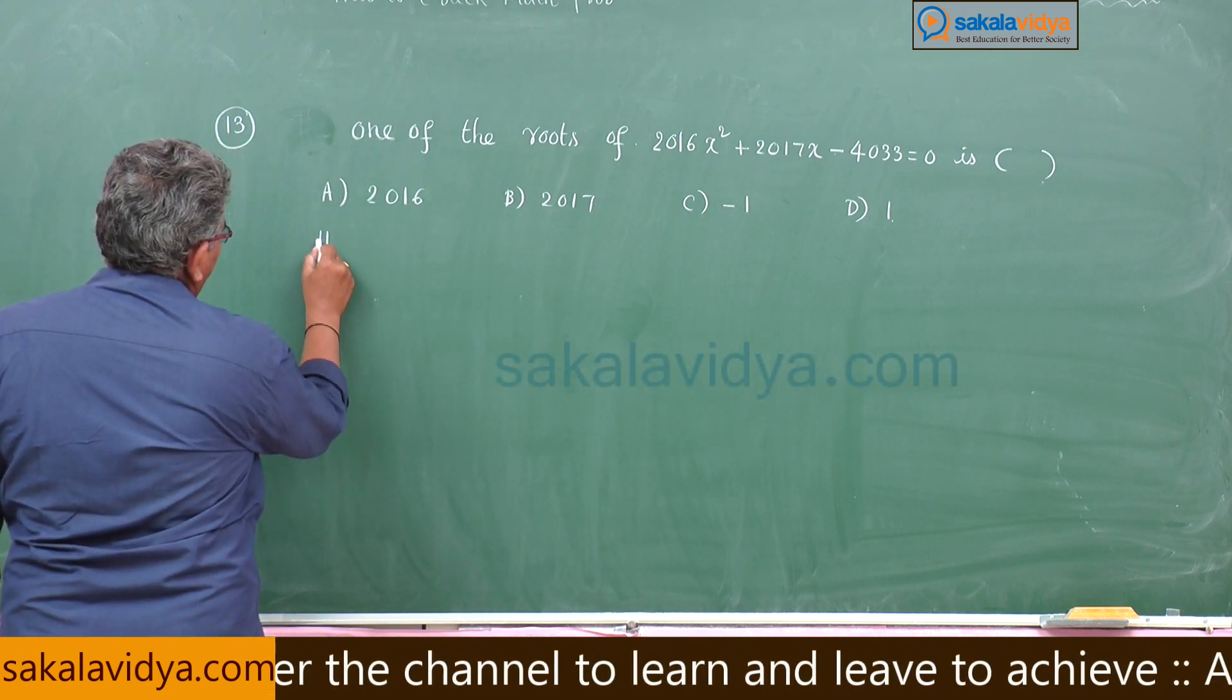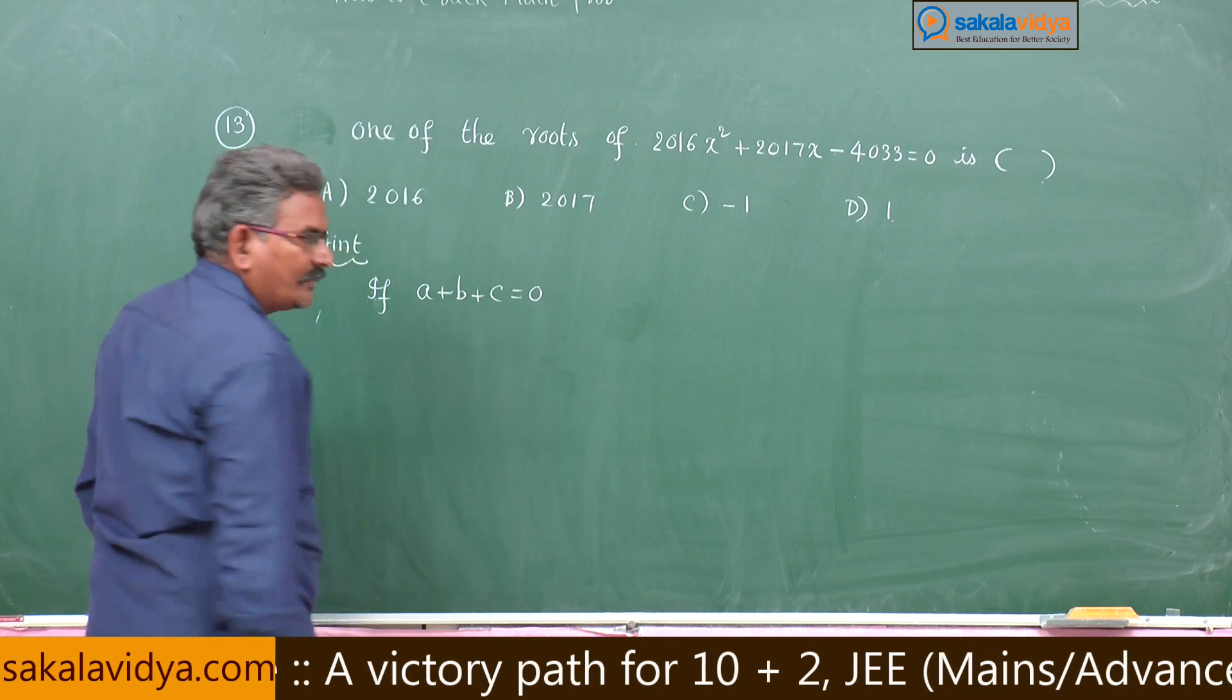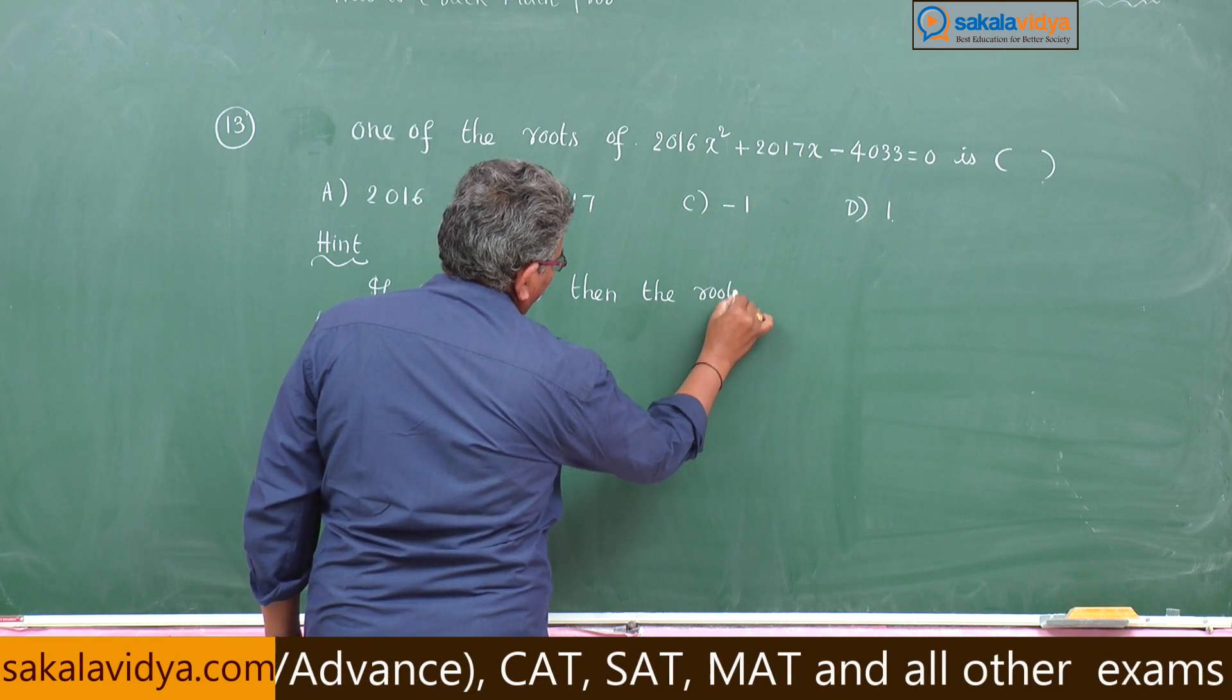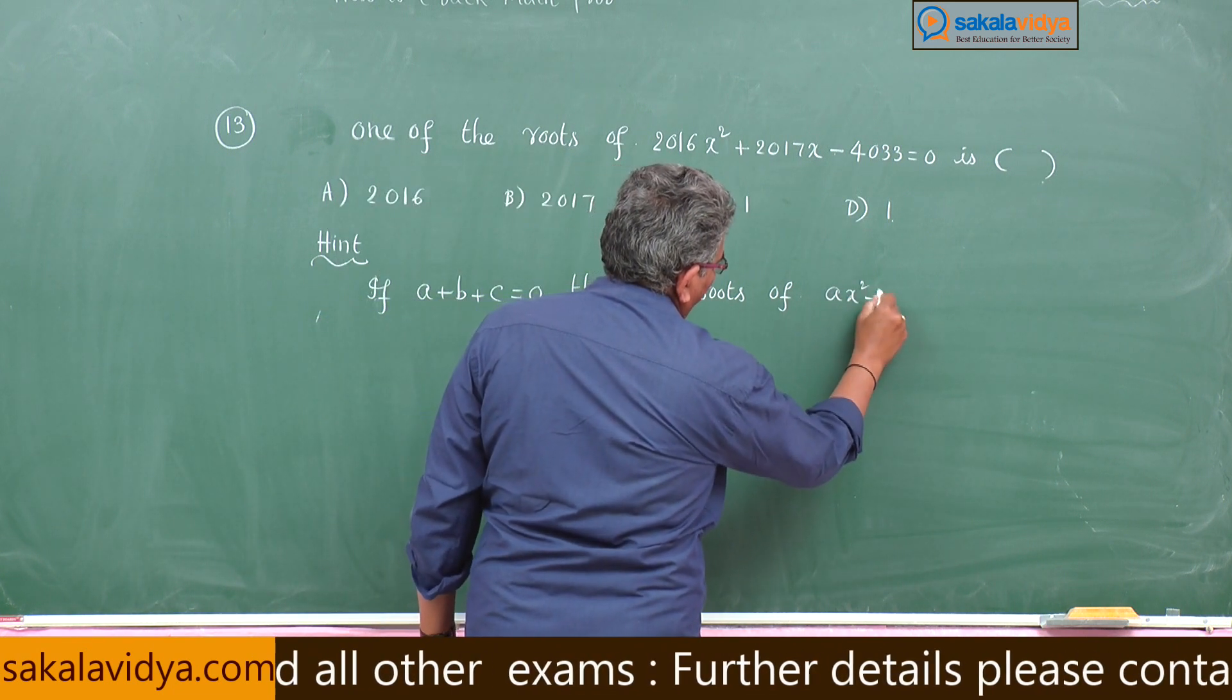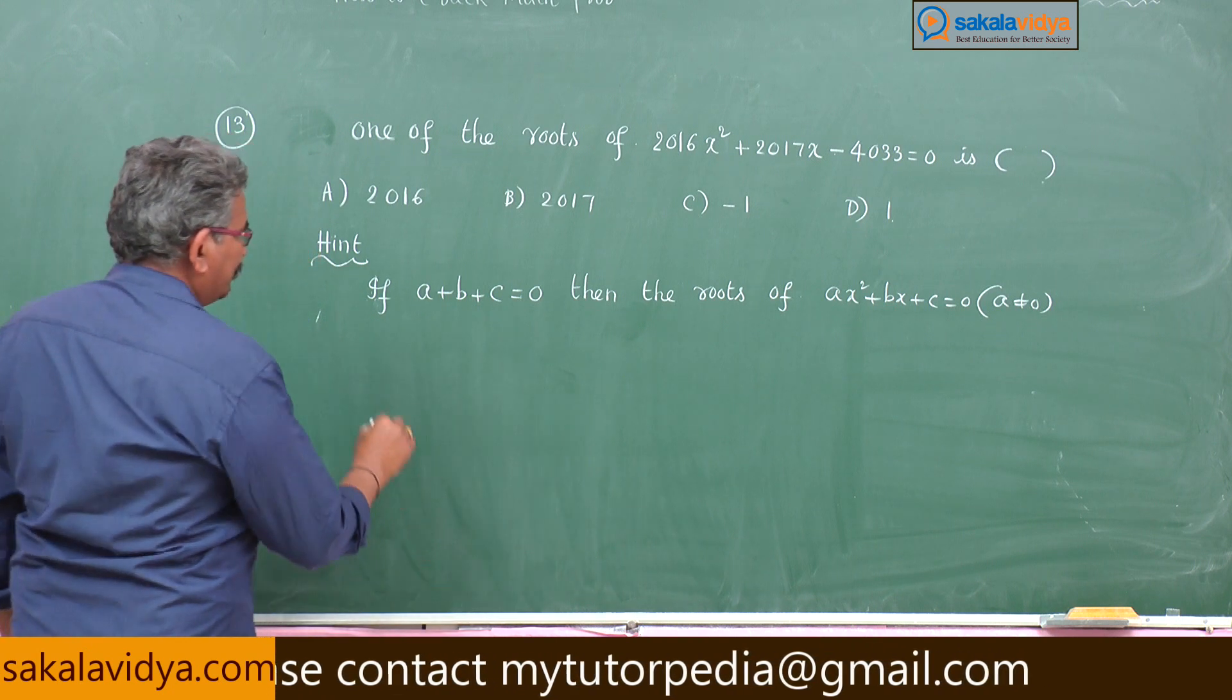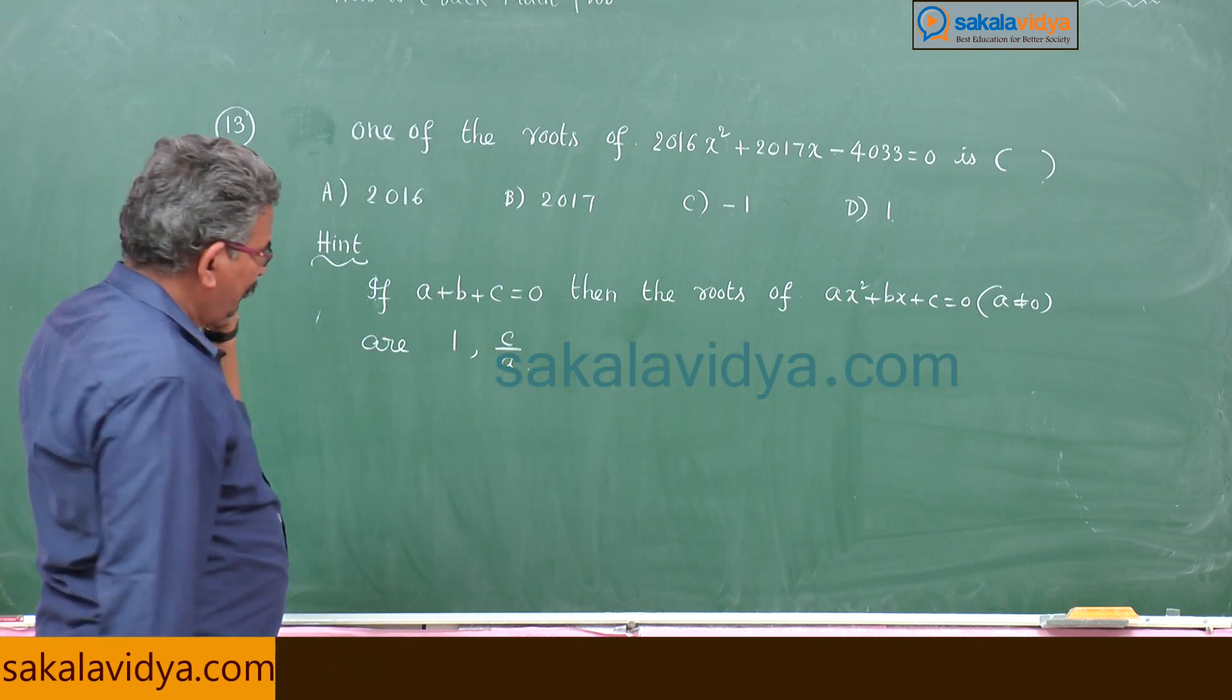Now let us formulate and remember as a hint for this problem. Hint: if a plus b plus c is equal to 0, then the roots of a x square plus b x plus c is equal to 0, where a does not equal to 0, are 1 comma c by a. That means product of the root c by a.